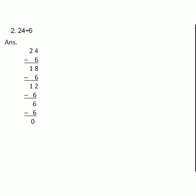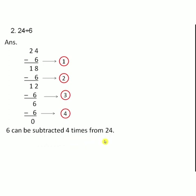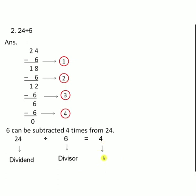How many times can 6 be subtracted from 24? 1, 2, 3, 4 — 4 times. So 24 divided by 6 is equal to 4. 4 is the quotient. Here, 24 is dividend — the number to be divided. 6 is divisor — the number by which to divide. The answer, 4, is the quotient.